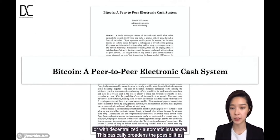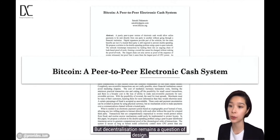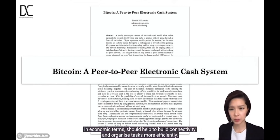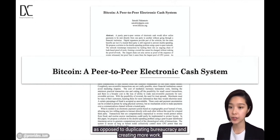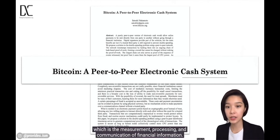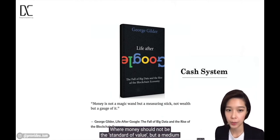This basically broadens the possibilities of public-private partnerships for Bitcoin, where the system is technically distributed but decentralization remains a question of design. Electronic is a technology that, in economic terms, should help to build connectivity and organize tasks more efficiently, as opposed to duplicating bureaucracy and creating more work. A cash system is for the purposes of accounting — the measurement, processing, and communication of financial information — where money should not be a standard of value but a medium of exchange that acts as a measuring stick for value. If money is subject to extensive financial speculation, it will no longer be a viable medium of exchange, as individuals will lose their ability to plan budgets and gauge supply and demand accurately.